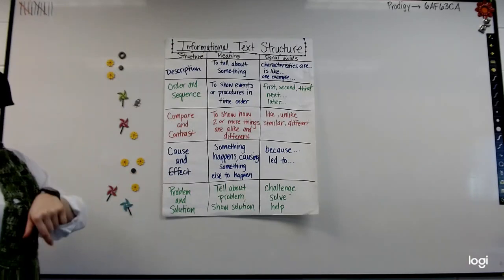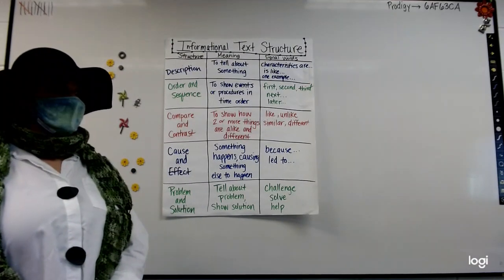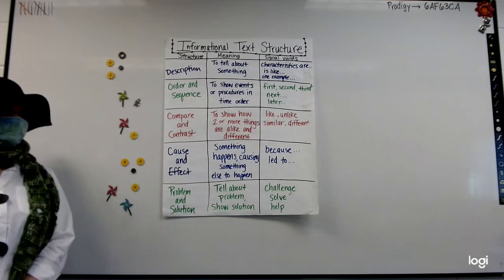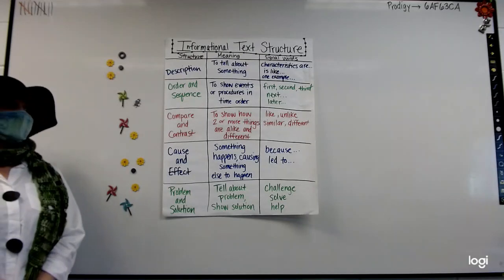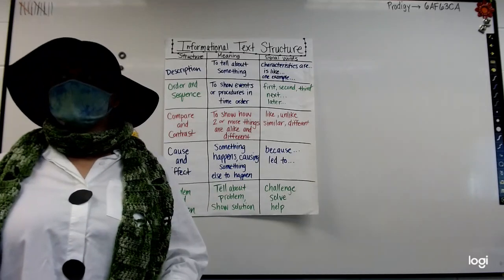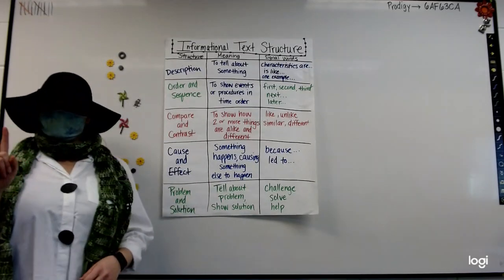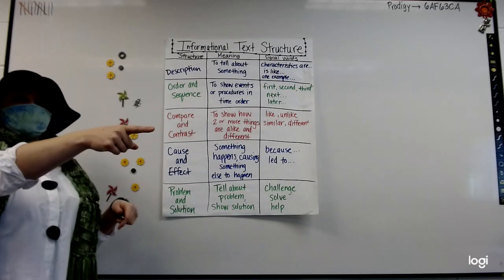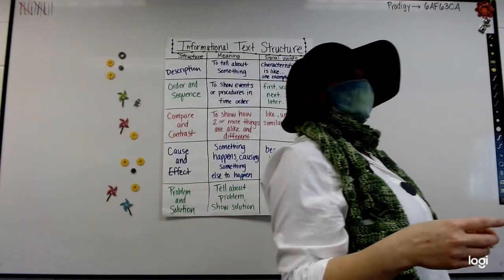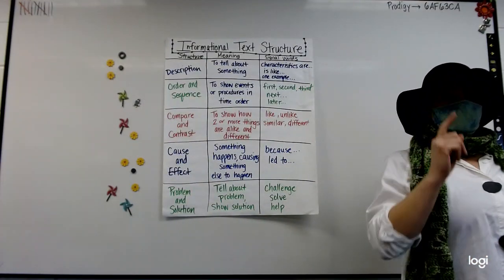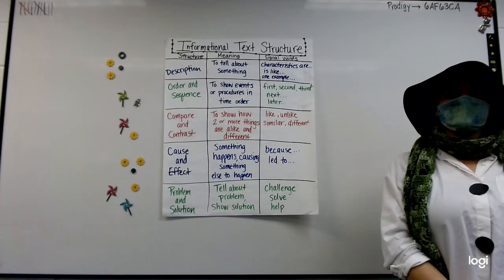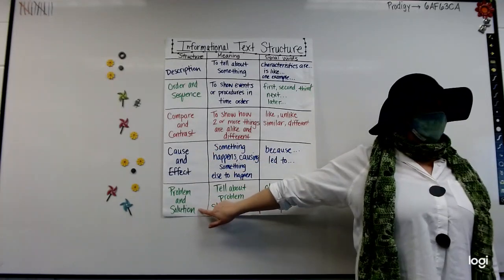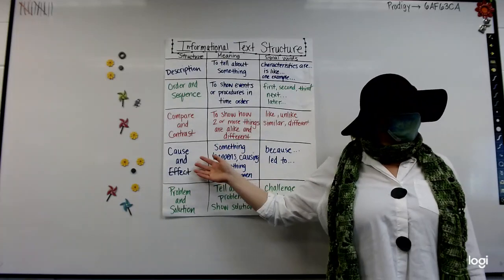Cause and effect — what's that one like, Angie? It's like when something happens and then it causes something else to happen. Like people started throwing trash in the ocean and the effect was that animals kept eating it. Good. The cause is people throwing trash in the ocean; the effect is animals started to eat the trash. The very last one is similar to cause and effect — problem and solution. Josiah? The problem is there's trash in the ocean. The solution is how people can fix that. So the way to tell these two apart: if they give you a solution to the problem, it's problem and solution. If they just tell you a problem and what's happening from it, it's cause and effect.